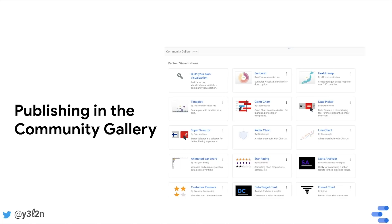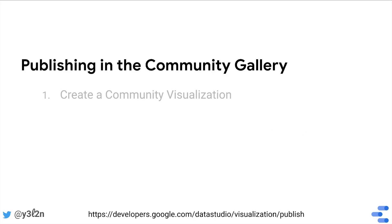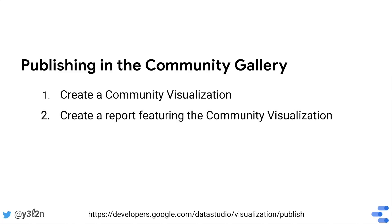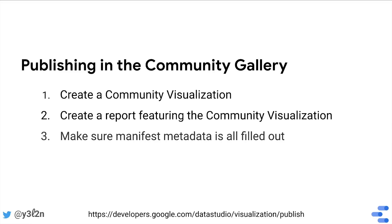Last, if you want to publish it in our community gallery, where your visualization and company name are featured in-product for all Data Studio users to see, go through our review and publishing process. Create a polished community visualization that works with more than one data source. Create a report showing how to use it, including documentation of the best data to use and the styling options available. Make sure all metadata in the manifest is appropriately filled out, including Privacy Policy URL and Terms of Service URL.